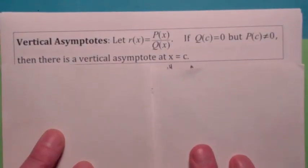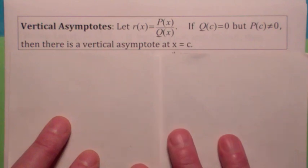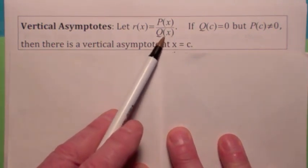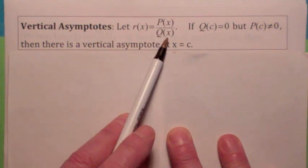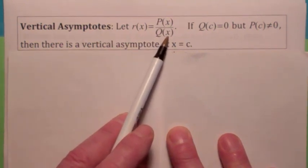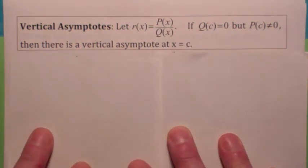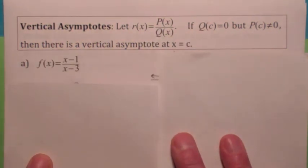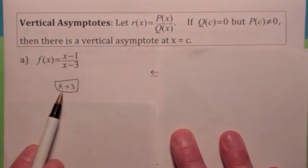The next question is: how do you find the vertical asymptotes? A vertical asymptote is going to occur where the denominator is zero. But just because the denominator is zero doesn't guarantee a vertical asymptote. For now, let's assume the denominator is zero at x equals c — there's a factor that makes the denominator zero — but the numerator is not zero there. In that case, there will always be a vertical asymptote. For example, x equals 3 makes the bottom zero but not the top, so you get a vertical asymptote at x equals 3.